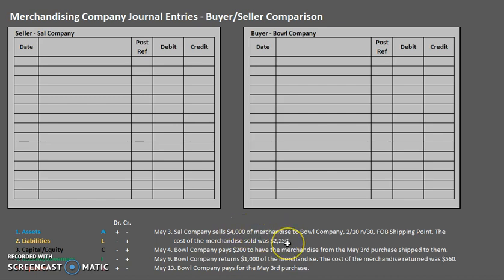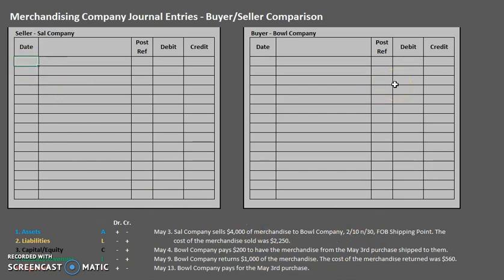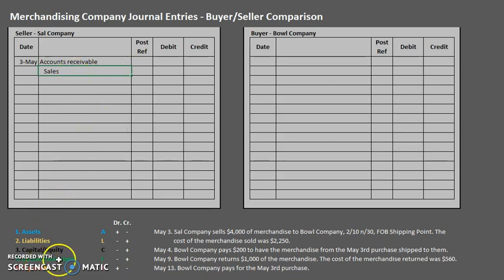We are using the perpetual method here, so we need to do a separate journal entry for the amount that we are selling and for the cost of merchandise sold. Since we are using a form of the net method, we also have to take into account the credit terms. So on May 3rd, the seller has a customer making a sale on account, so Accounts Receivable — our asset — is going to be increasing for the amount that they owe us, and Sales is also going to be increasing.